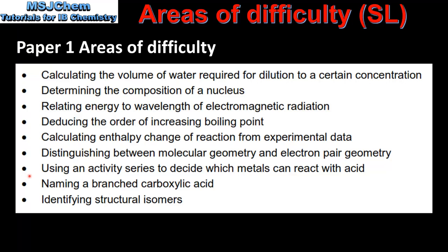Next we have using an activity series to deduce which metals can react with acid. The activity series is shown in the data booklet. Any metal above hydrogen on the activity series will react with an acid to produce a salt and hydrogen gas.